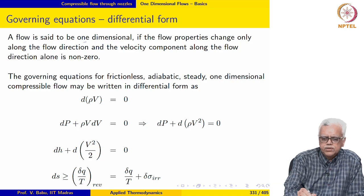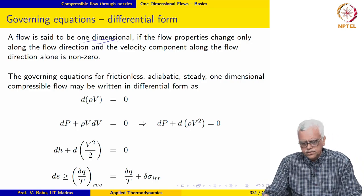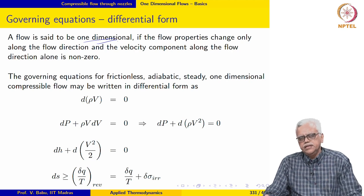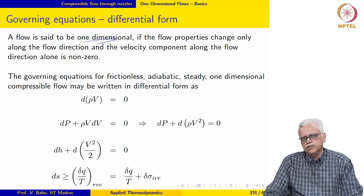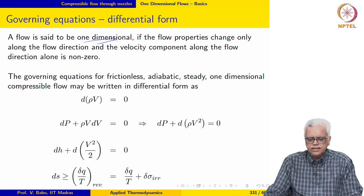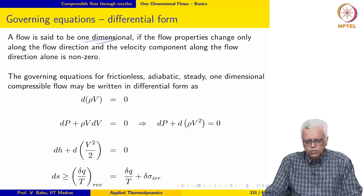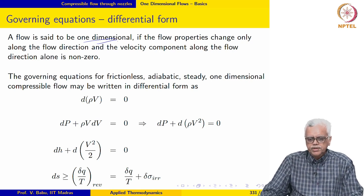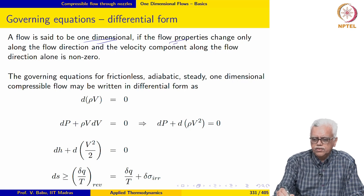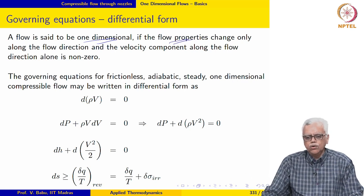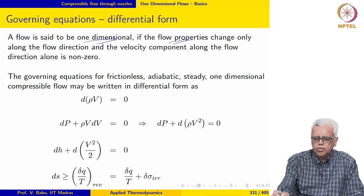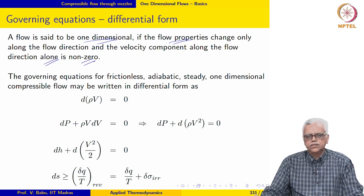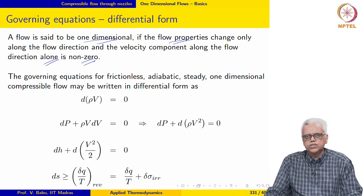We will be dealing largely with one-dimensional flow in this module. Later on when we do nozzle flows, we will categorize the nozzle flow as a quasi one-dimensional flow. For now, it is sufficient to say that we will be looking at one-dimensional flows. What we mean by one-dimensional flow is that the flow properties change only along the flow direction, and the velocity component along the flow direction alone is nonzero — usually called the streamwise component.